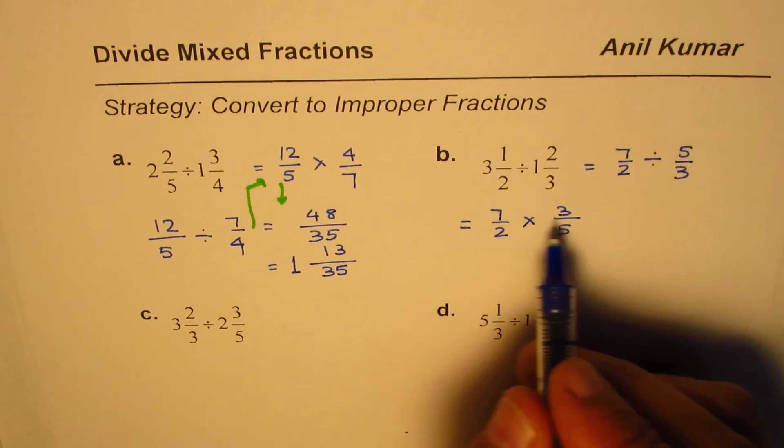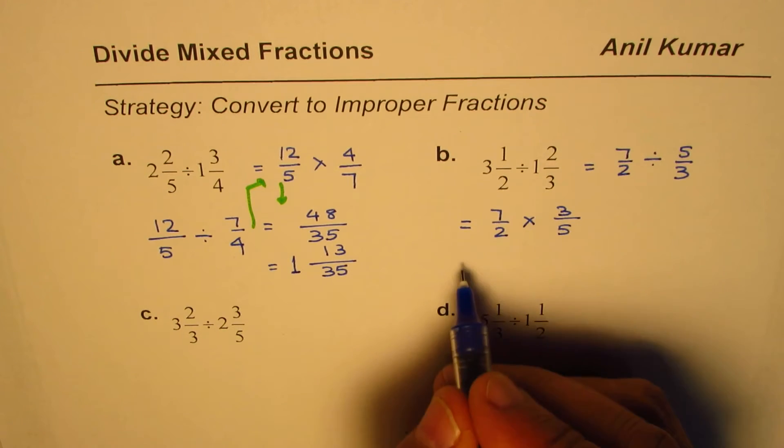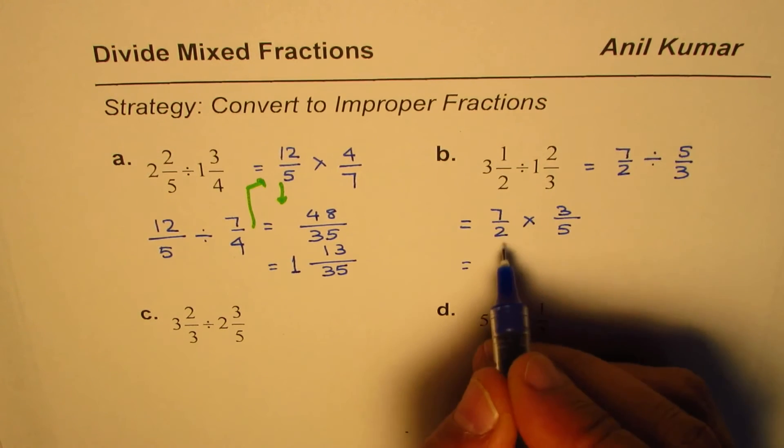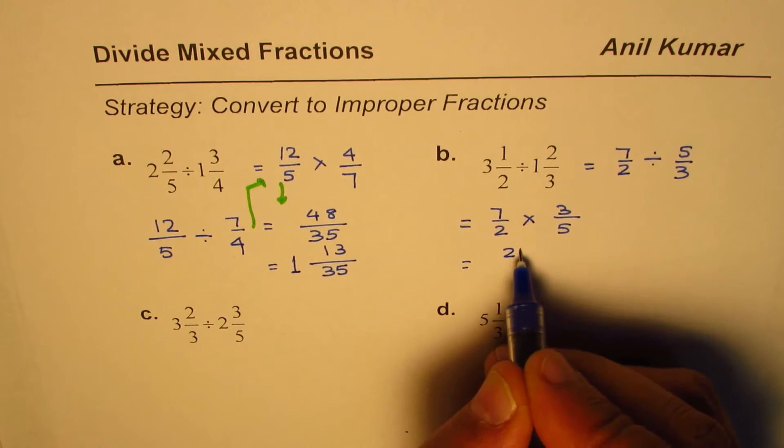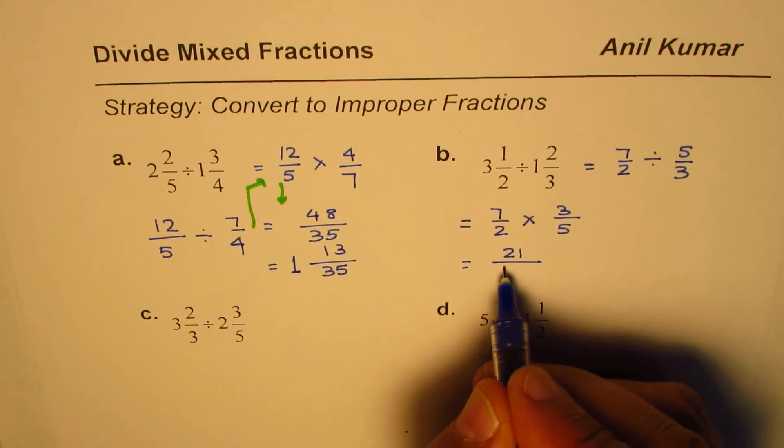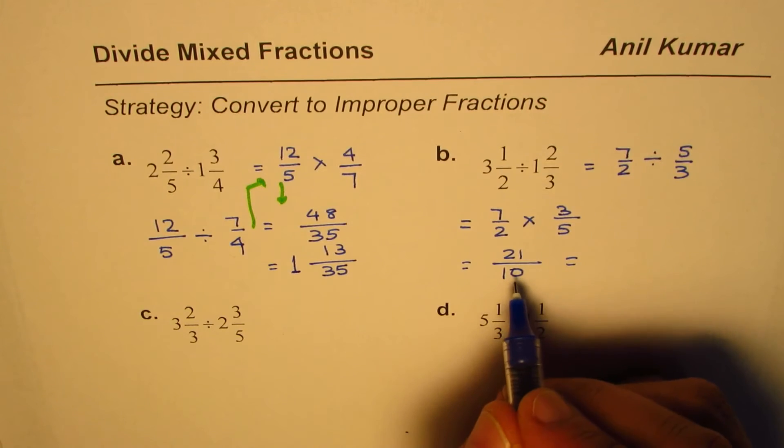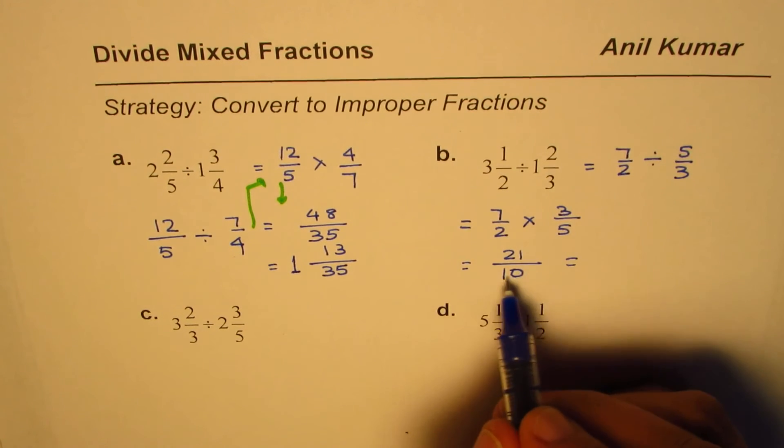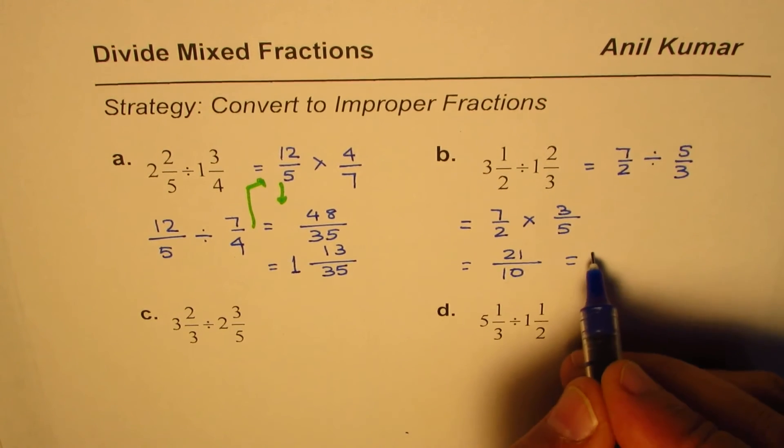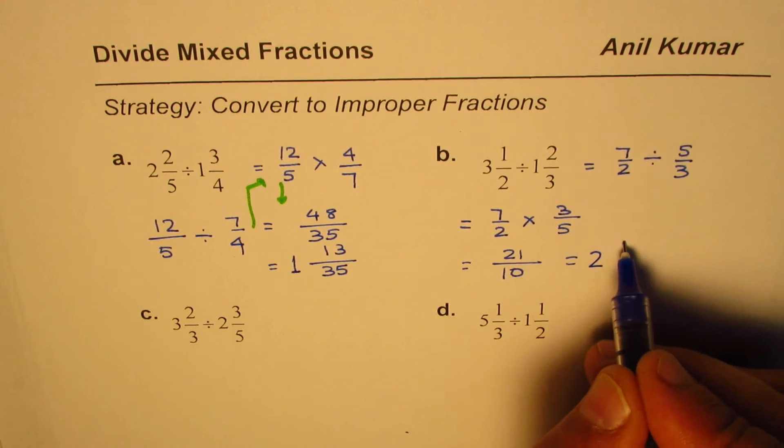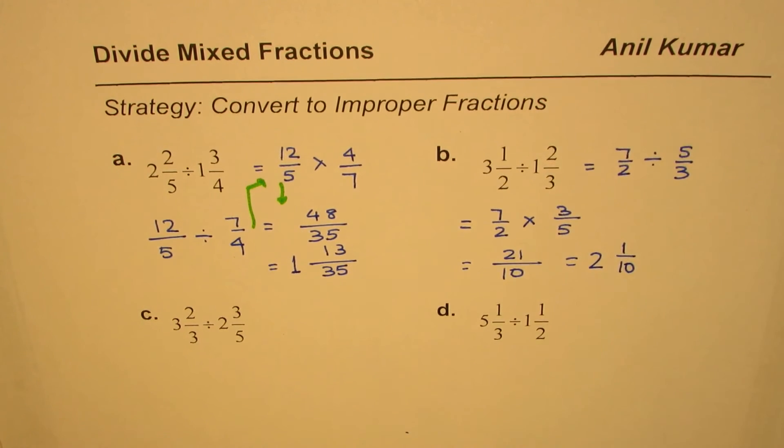Now we see there are no common terms. We can straight away multiply numerators: 7 times 3 is 21. Denominators: 5 times 2 is 10. Now this could be written as a mixed number. Dividing 21 by 10, 2 times we get 20, 1 is the remainder. And that's the final answer.